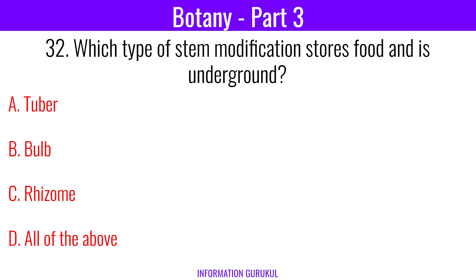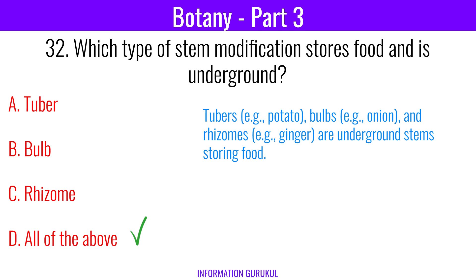Which type of stem modification stores food and is underground? All of the above. Tubers, bulbs, and rhizomes are all underground stems that store food.